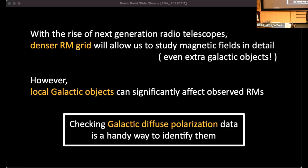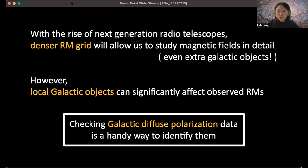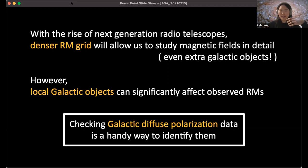A question from Alec Thompson: can RMs from broadband diffuse emission help us to separate the foreground and background RMs towards the leading arm? For this research I just used the polarization gradient map. But if we check the Faraday depth — the strength as a Faraday spectrum — it might say something about two components along the line of sight, and that might help.